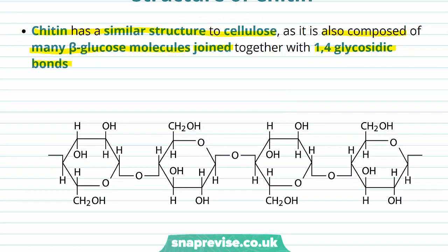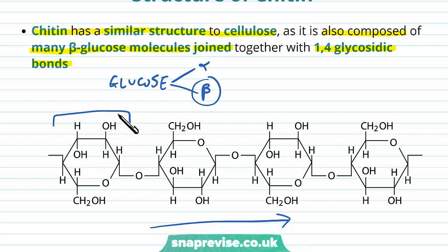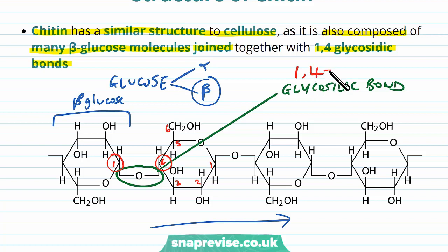As a recap: glucose can be one of two isomers — either alpha or beta. In the case of cellulose and chitin, we're talking about the beta molecule, which looks like this hexagonal structure. We have a long chain of beta glucose molecules, and as monomers they're linked together via covalent bonds known as glycosidic bonds. You can see the bonds between these hexagonal glucoses as they connect an oxygen between them. We number the carbons in a sugar from one to six, and between two glucoses we have carbon one and carbon four linked — hence we call these 1,4 glycosidic bonds.